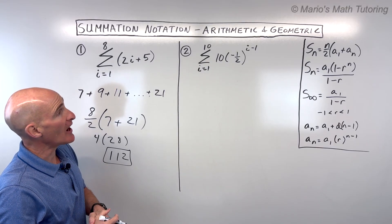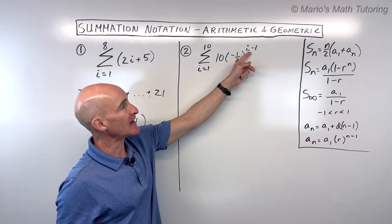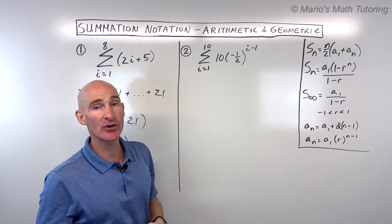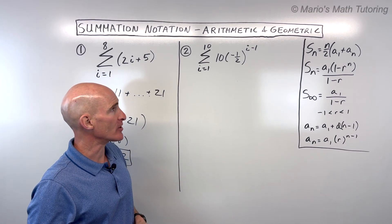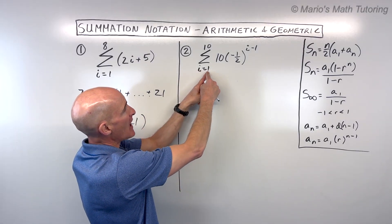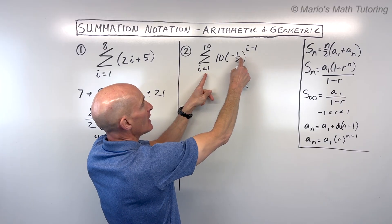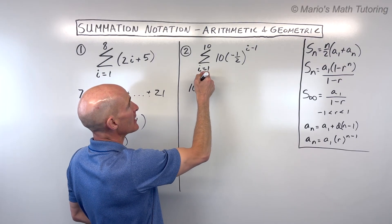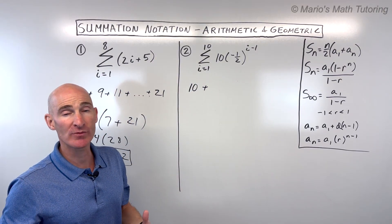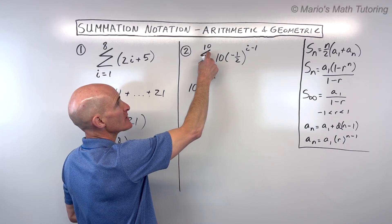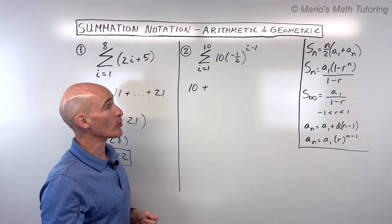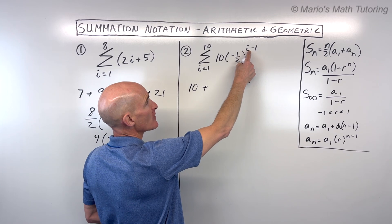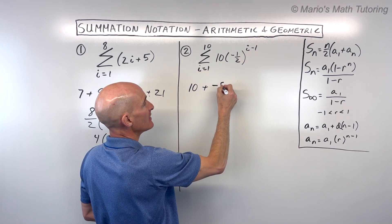For example number two, notice that this is like an exponential equation. When it's in the form a times b to the x, it's going to be a geometric series. If I put one in here, one minus one is zero, negative one half to the zero power is one, times 10 is 10. So that's the value of our first term. Then when i equals two, two minus one is one, negative one half to the first power is negative one half, times 10 is negative five.